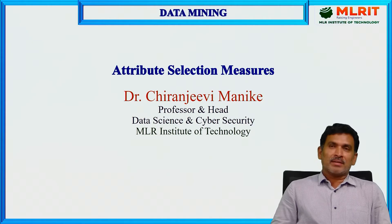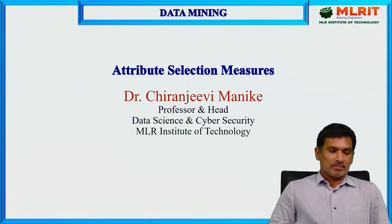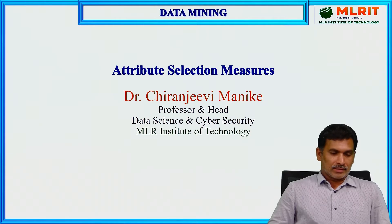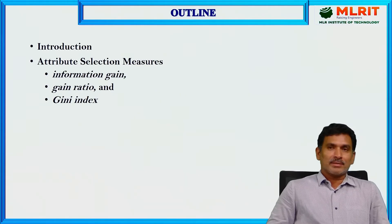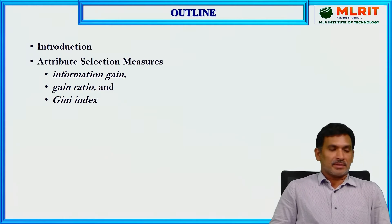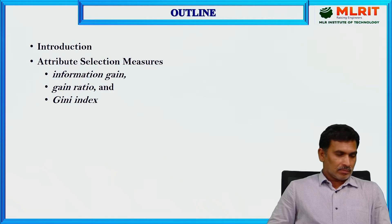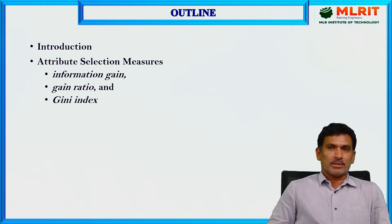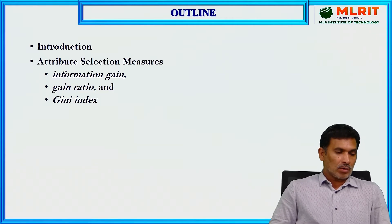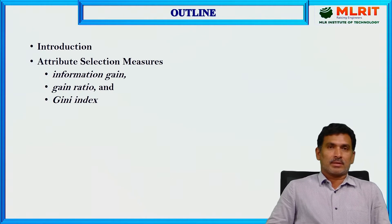As a part of the data mining video lecture series, in this lecture we are going to discuss attribute selection measures. We will see what measures are available to select the best attribute. We will discuss information gain and then see a numerical example of how to use information gain to select a particular attribute to construct decision trees.